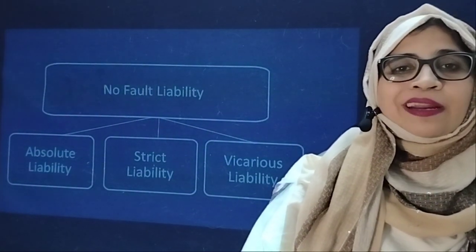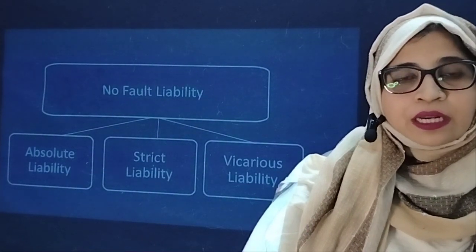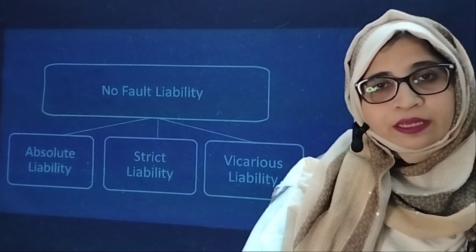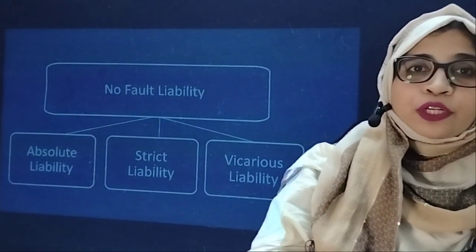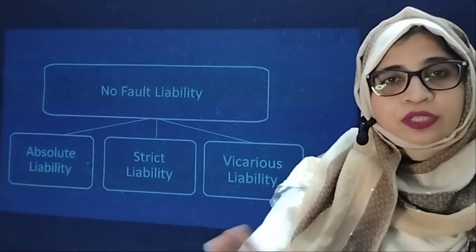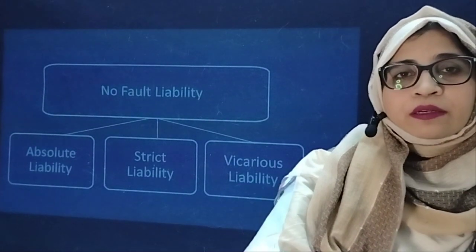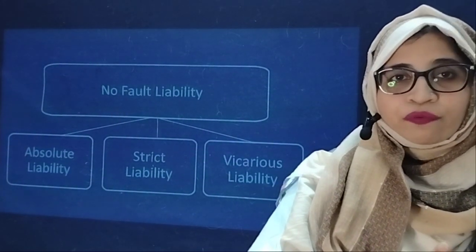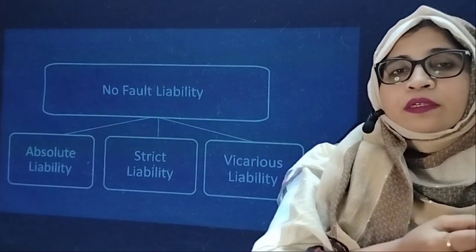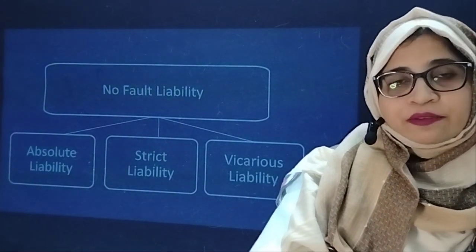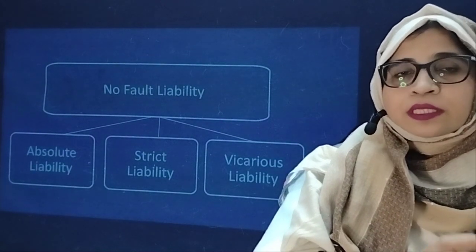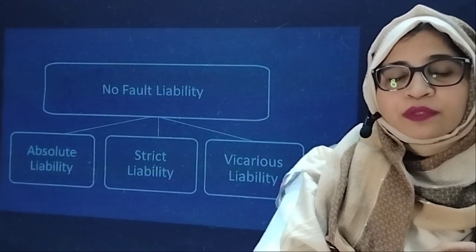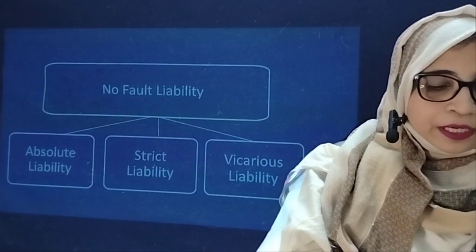There are three kinds of no fault liabilities: strict liability, absolute liability, and vicarious liability. In the previous video, we discussed strict liability along with various cases and exceptions of that particular case — specifically the rule in Rylands versus Fletcher relating to strict liability.